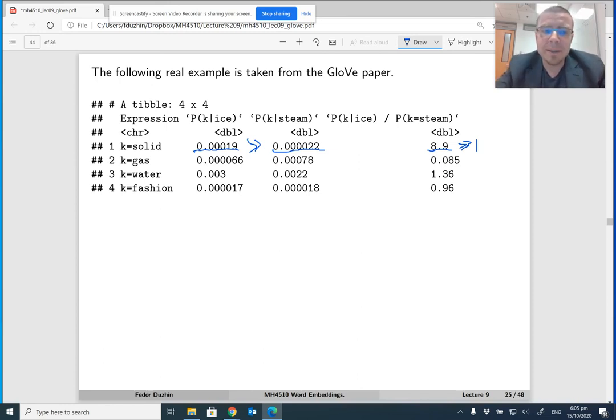Well, at the same time, if we look at the second row, so here we have the probability that the word gas appears in the context of ice and the word gas appears in the context of steam. And, of course, it is much more likely that gas appears in the context of the word steam because steam is gaseous. And this can be seen by the fact that the first probability is much smaller than the second probability, or that the ratio of the two probabilities is much smaller than one.